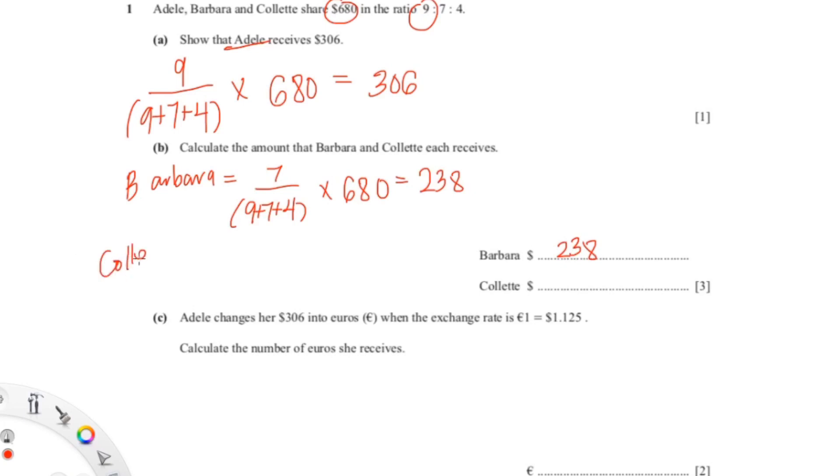Colette would be 4 over (9+7+4) times 680, and when you put this into your calculator, you'd get a value of 136. So Colette gets 136.